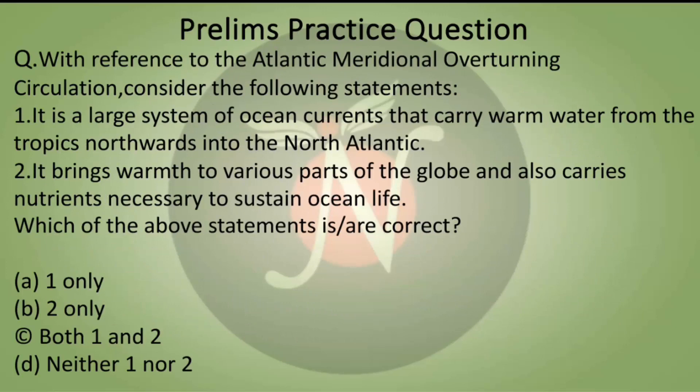Now we come to today's prelims practice question. With reference to Atlantic Meridional Overturning Circulation, consider the following statements: First, it is a large system of ocean currents that carry warm water from the tropics northwards into the North Atlantic. Second, it brings warmth to various parts of the globe and also carries nutrients necessary to sustain ocean life. Which of the following statements are correct? You can try to answer in the comment section below and we will let you know if it's correct or not.